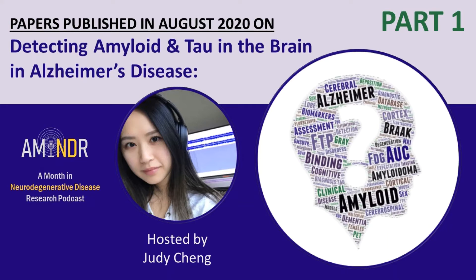Whether you're in the lab, on the bus, or cooking your meal, we hope you find this podcast useful and accessible. Let's go ahead and get started. Our first five papers use the Pittsburgh compound B tracer to image beta amyloid plaques in brain tissue. I'll be referring to this as PIB.